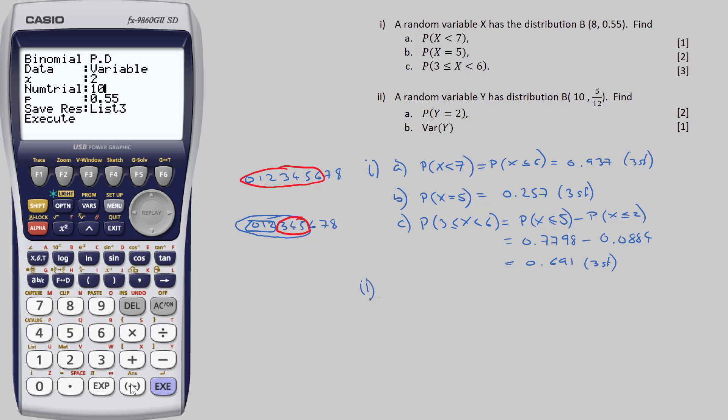Now the maths tables won't have 5 twelfths, which means that without a graphical calculator you would have to do this one using combinations. So it would be 10 choose 2, p to the power of 2, q to the power of 8. But here we can just tap in the parameters and let the calculator work it out, and we write it down. So 0.105 to 3 significant figures.